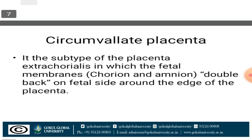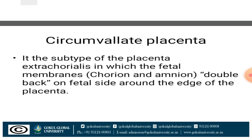You can see in this image. In this type of placenta, which is a subtype of extrachorialis, on the fetal surface there are two membranes present: the chorionic membrane and the amnionic membrane. In this condition, the chorion membrane and amnion membrane are rolled back or doubled back over on the fetal side around the edge of the placenta.